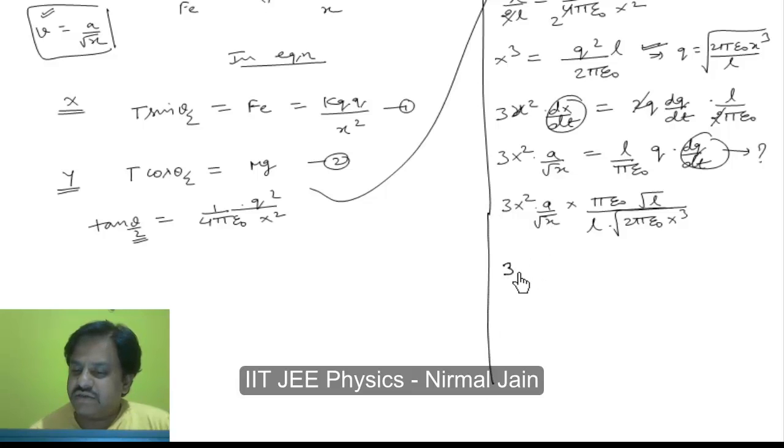What we get here is 3 A X to the power 3 by 2 by root L times root of 2 pi epsilon 0 mg and this is again X to the power 3 by 2. X to the power 3 by 2 and X to the power 3 by 2 both gets cancelled out.